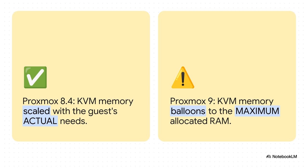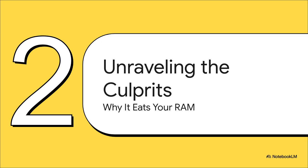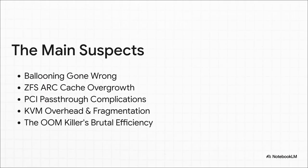It all comes down to a huge change in behavior. With Proxmox 8, if you gave a VM 32 gigs of RAM but it was only using 8, the host knew it was only using 8. But with Proxmox 9, that same VM instantly grabs the entire 32 gigs and holds it hostage, whether it needs it or not. The community has identified the main suspects: memory ballooning gone wrong, a ZFS cache growing too big, complications with PCI pass-through, general KVM overhead, and the OOM killer acting too aggressively.